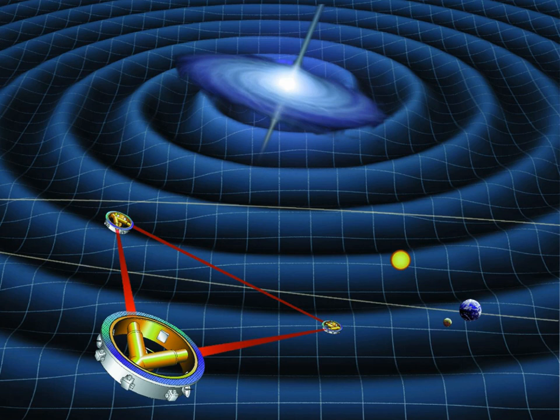The Laser Interferometer Space Antenna is a European Space Agency mission designed to detect and accurately measure gravitational waves—tiny ripples in the fabric of space-time—from astronomical sources. LISA would be the first dedicated space-based gravitational wave detector. It aims to measure gravitational waves directly by using laser interferometry.